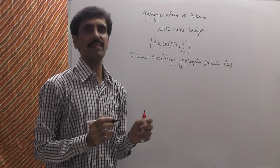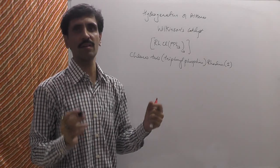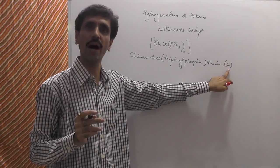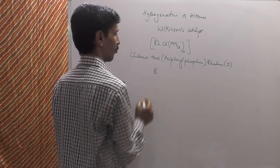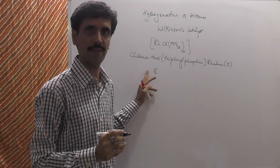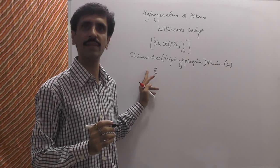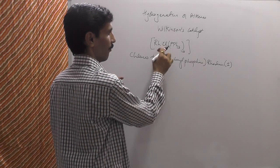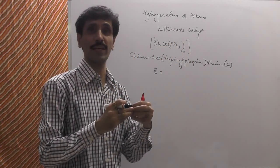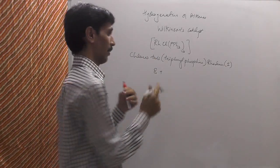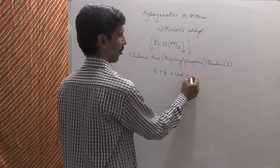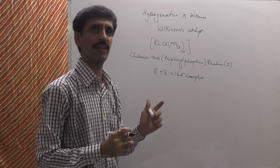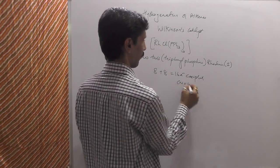Rhodium has atomic number 45, and has nine electrons in the outer shell, but since it exists in the plus one state, there are eight electrons. Rhodium belongs to the cobalt family — cobalt has atomic number 27. In this complex, rhodium has eight electrons, plus four ligands each donating a pair of electrons, giving eight more — making it a 16-electron complex. Because there are four donor atoms coordinated to rhodium, the coordination number is four.